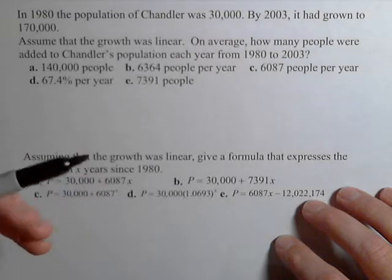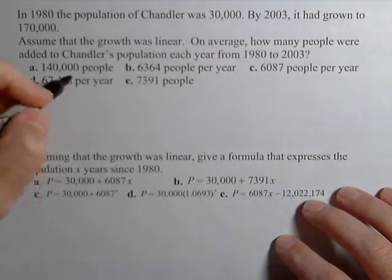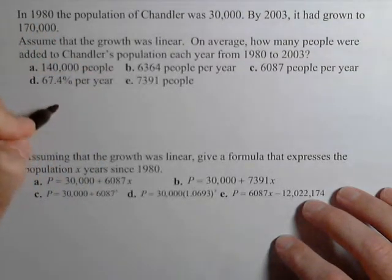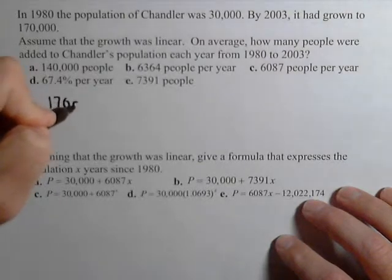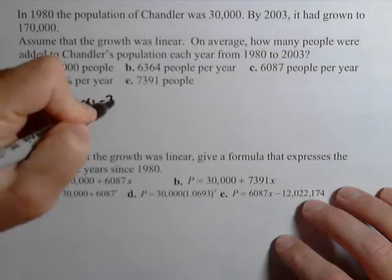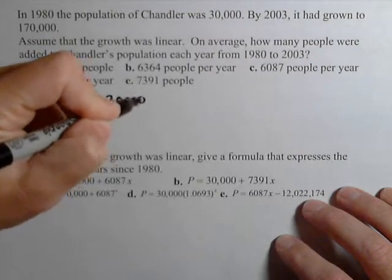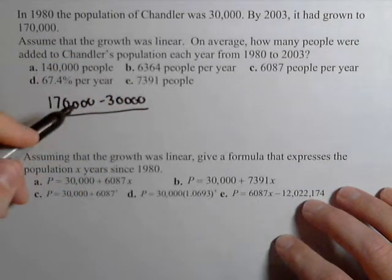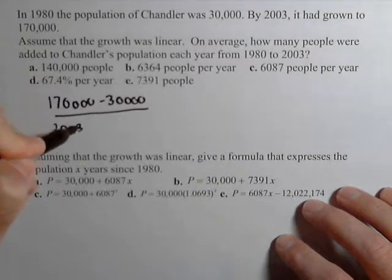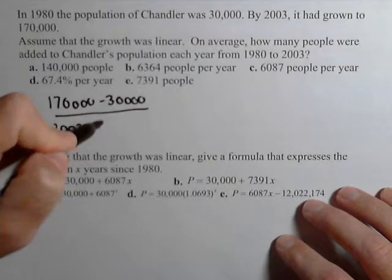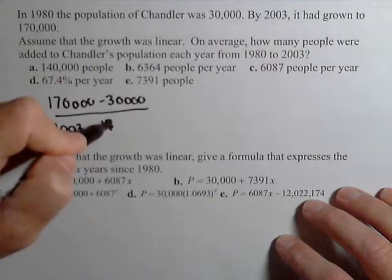So because we're assuming it's linear, it's going up by a constant amount, and we need to find the rate of change. So we're gonna do that by doing the change in number of people, so 170,000 minus 30,000, over the change in time. The big thing is we just need to make sure that the change in years is 23 years.